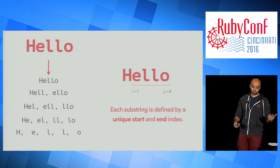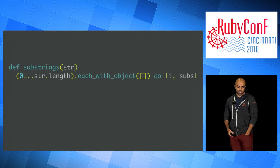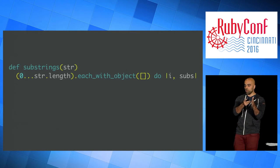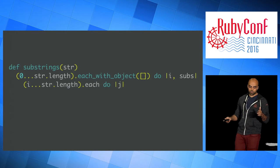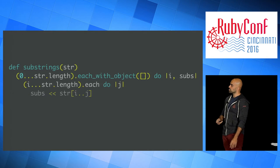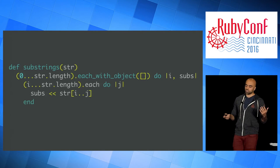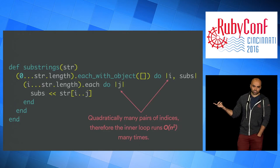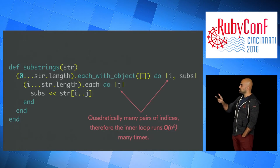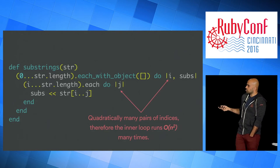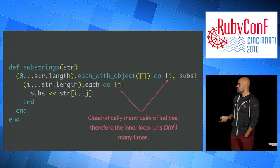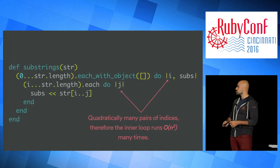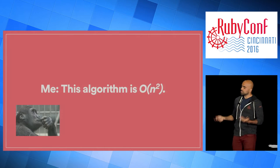You can turn that into Ruby code pretty easily. We write a method called substrings using each_with_object to collect all the substrings inside a nested loop. We go from i=0 to the end of the string, and inside that, another loop for j — the end index — starting at i and going to the end. Then we shovel into our collection the substring from i to j. From the structure of this code, with two nested loops, there will be quadratically many pairs of indices — so the inner loop runs O(n²) times. This algorithm is O(n²).